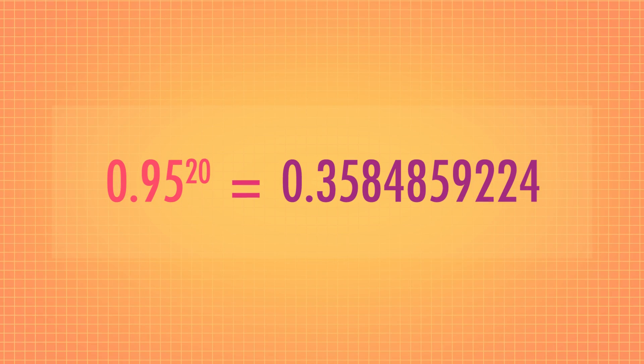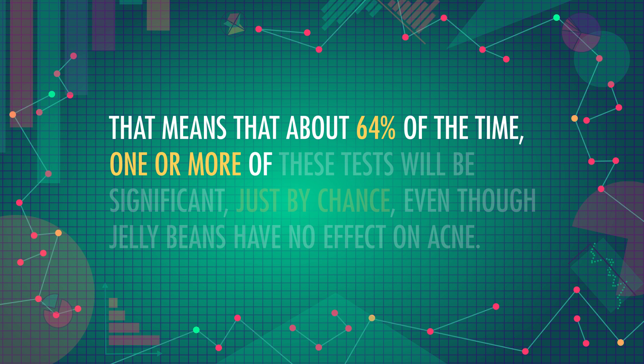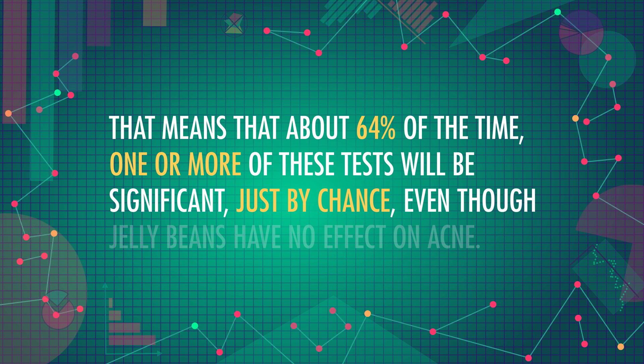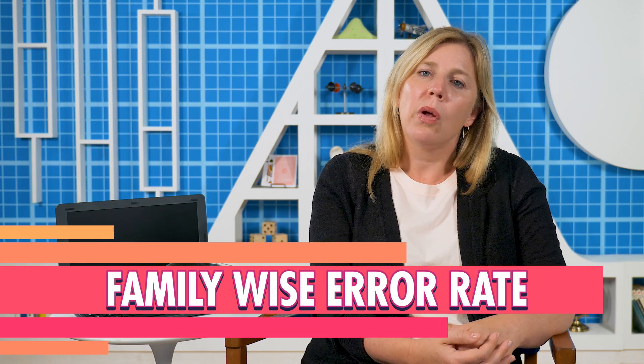We know that there's a 5% chance of getting a p-value less than .05 even if no color of jelly bean is actually linked to acne. That's a 1 in 20 chance, and we just did 20 separate tests. So what's the likelihood that we'd incorrectly reject the null? Turns out with 20 tests, it's way higher than 5%. If jelly beans are not linked with acne, then each individual test has a 5% chance of being significant and a 95% chance of not being significant. The probability of having none of our 20 tests come up significant is 0.95 to the 20th power, or about 36%. That means about 64% of the time, one or more of these tests will be significant just by chance, even though jelly beans have no effect on acne. This inflated type 1 error rate is called the family-wise error rate. When doing multiple related tests, or even multiple follow-up comparisons on a significant ANOVA test, family-wise error rates can go up quite a lot — meaning if the null is true, we're going to get a lot more significant results than our prescribed type 1 error rate of 5% might imply.